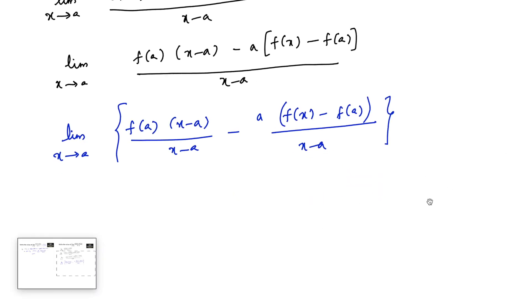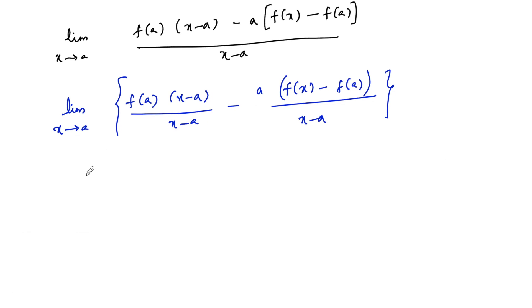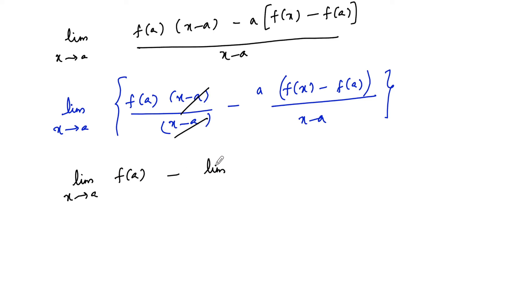By algebra of limits, we can take the limits separately, and here we can cancel x minus a in the numerator and denominator. We can write: limit x tends to a of f(a), minus limit x tends to a of a into f(x) minus f(a) divided by x minus a.